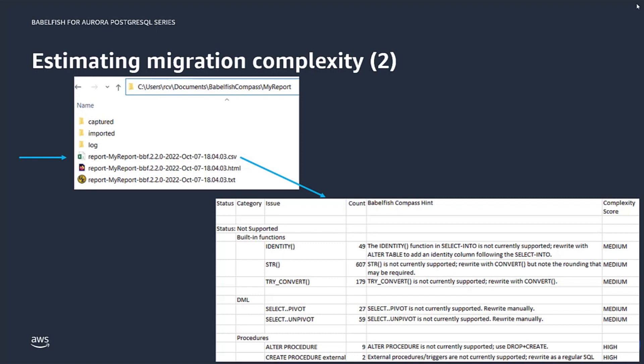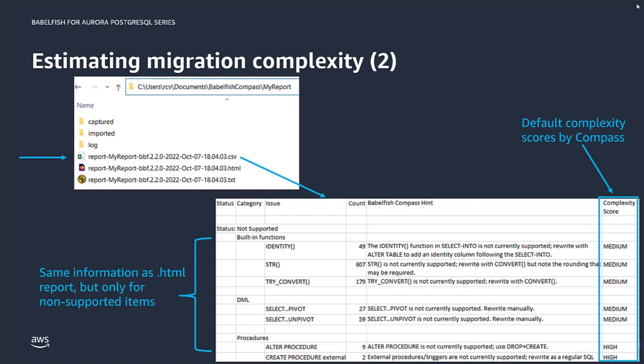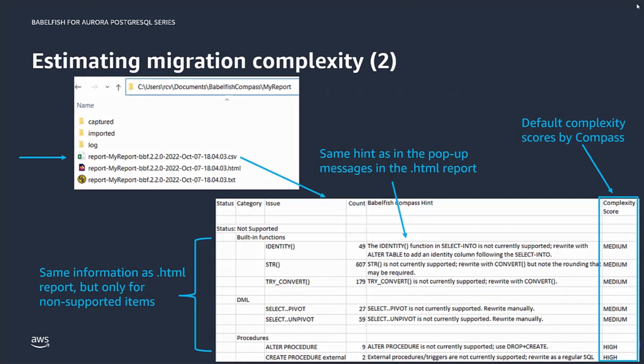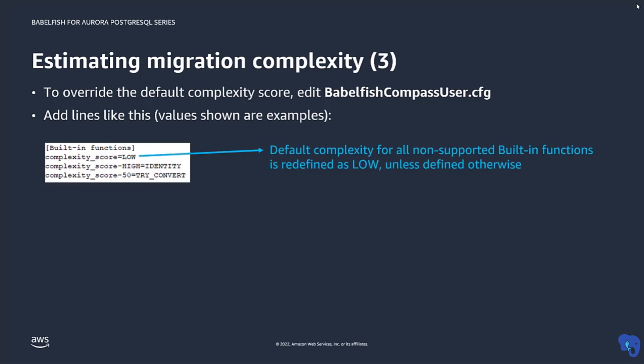In the spreadsheet, interpreting these complexity scores is entirely up to you. You need to add your own formulas to process these complexity scores into something that helps you answer the original question about the migration's complexity. But you have all freedom here. In fact, you can overwrite the default Compass complexity scores by your own by adding lines to the BabelfishCompassUser.cfg file, as shown here.